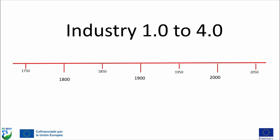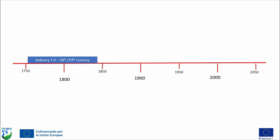So, Industry 1.0 to 4.0. Around the late 18th century to mid 19th century we had Industry 1.0, also known as the First Industrial Revolution, characterized by the introduction of mechanization and steam power and new manufacturing processes.